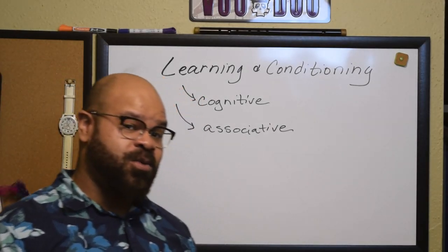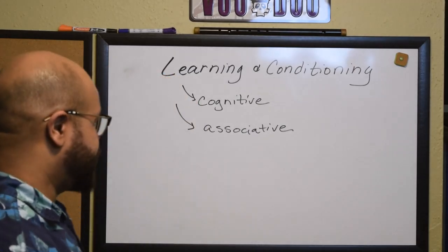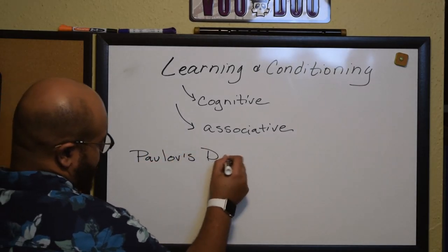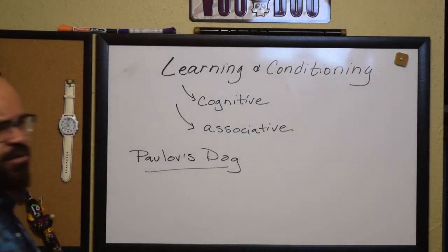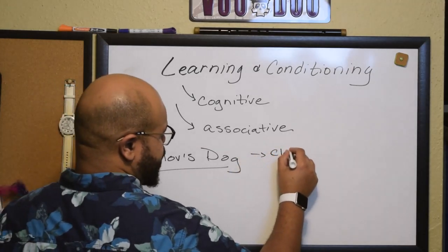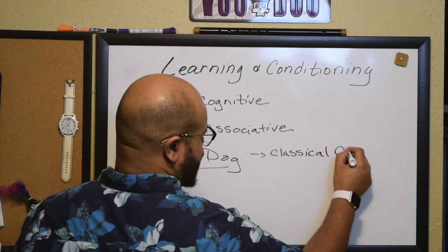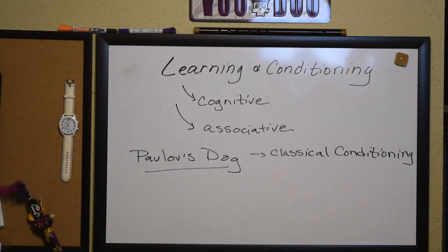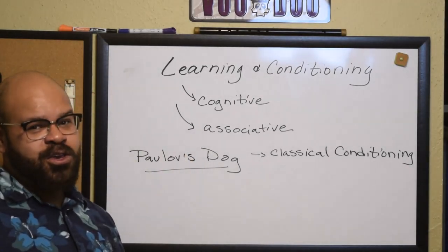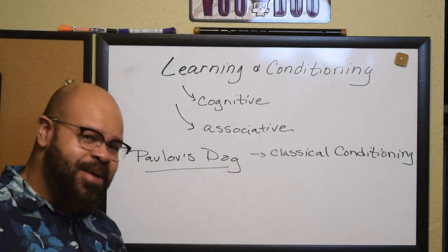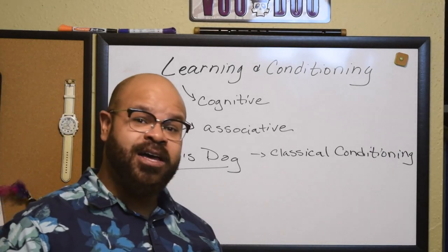So what does this look like? Well, the very classic example is Pavlov's dog. Pavlov's dog is an example of a type of associative learning that we call classical conditioning. Now, conditioning is really just another type of learning. The best thing to think about conditioning as is a type of training.